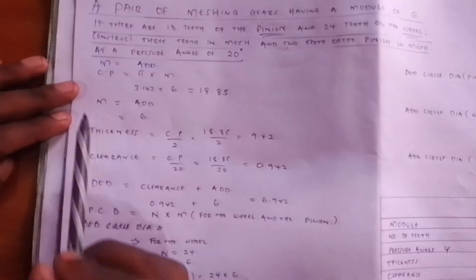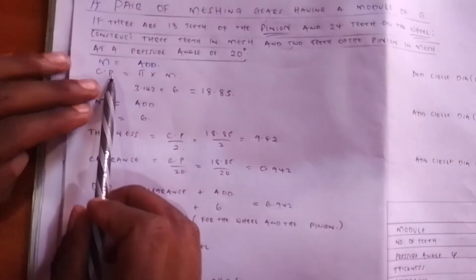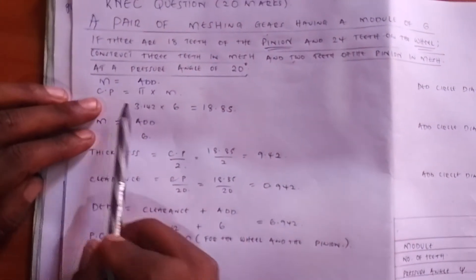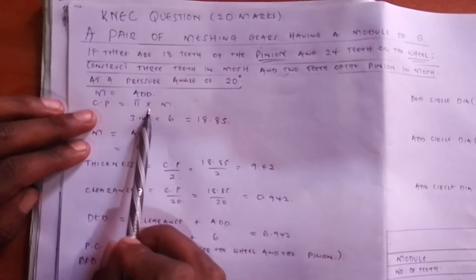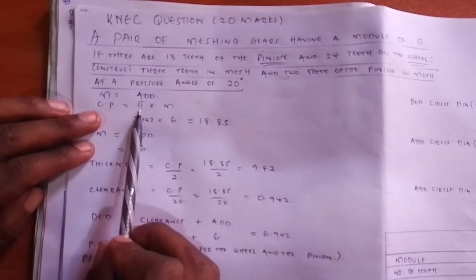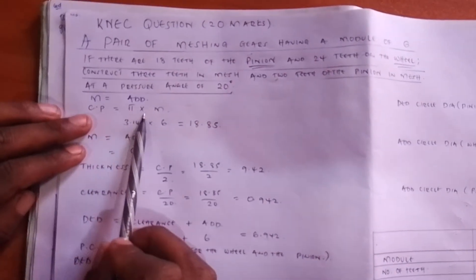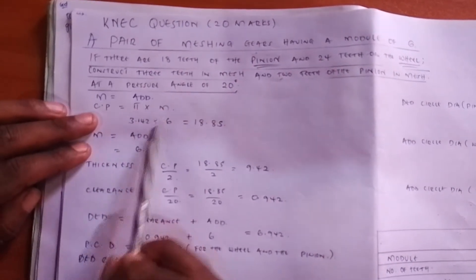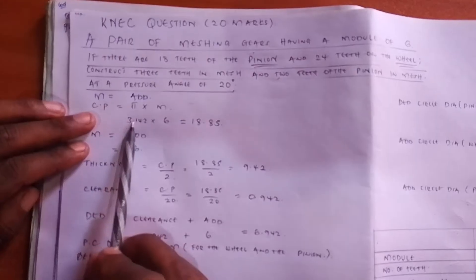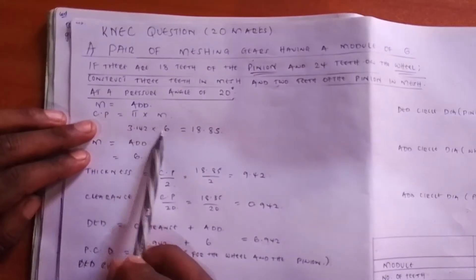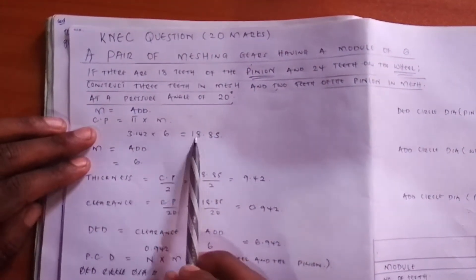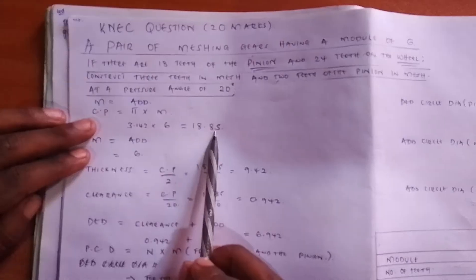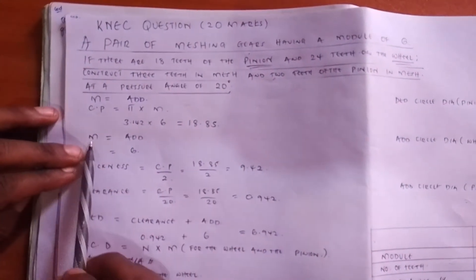So first we look for the CP. What is the CP? The CP is equal to pi times module, which is 3.142 times 6, or 22 over 7 times 6, which will be 18.85 if you do it in your calculator.